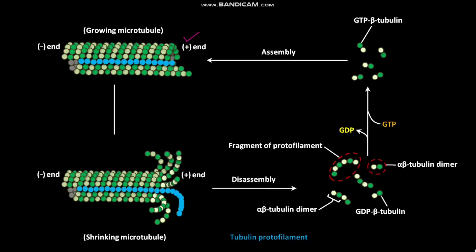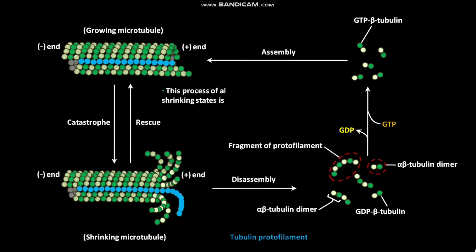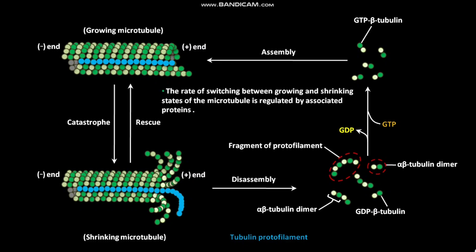The growing microtubule can undergo catastrophe to form a shrinking microtubule, and the shrinking microtubule can undergo rescue to form the growing microtubule. This process of alternating between growing and shrinking states is known as dynamic instability. The rate of switching between growing and shrinking states of the microtubule is regulated by associated proteins. The plus end of the microtubule is subject to dynamic instability.